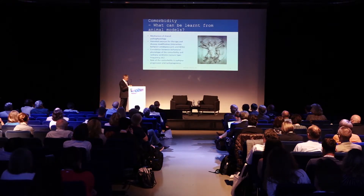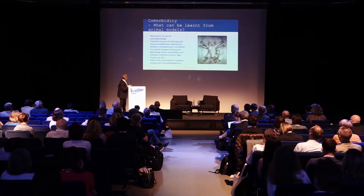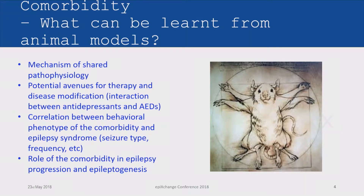We may learn a lot from animal studies about the mechanism of shared pathophysiology, potential evidence for therapy and disease modification. There are interactions between antidepressants and antiepileptic drugs, correlation between the behavioral phenotype of comorbidity and epilepsy syndrome such as seizure type and frequency, and a role of comorbidity in epilepsy progression and epileptogenesis.